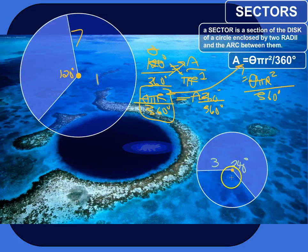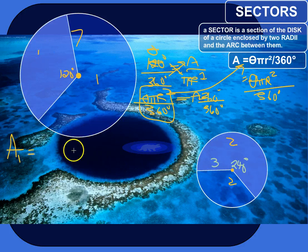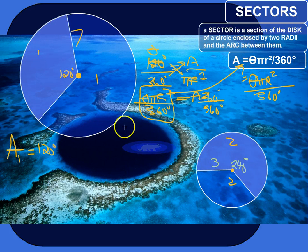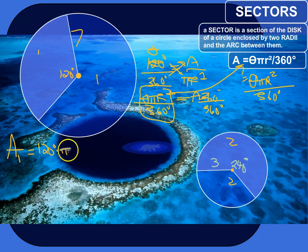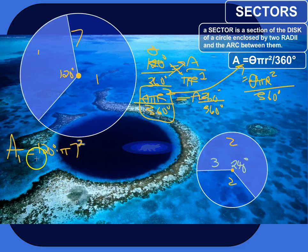Circle 1 and circle 2. For sector 1, the area of sector 1 would be theta — in this case 120 degrees — times pi r squared. Pi is just a special number, 3.14 and so on. The radius here is 7 units, so 7 squared is 49, divided by 360 degrees.